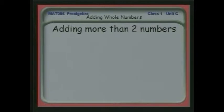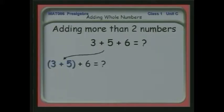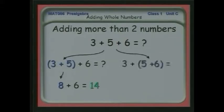What about adding more than two numbers together? For example, suppose we had three plus five plus six. One way would be to group the three plus five to get eight and then add six to it, and we would get 14. But what about if we added the three to the five plus six grouping? That gives us three plus 11 is 14, and amazingly enough, we get exactly the same answer.